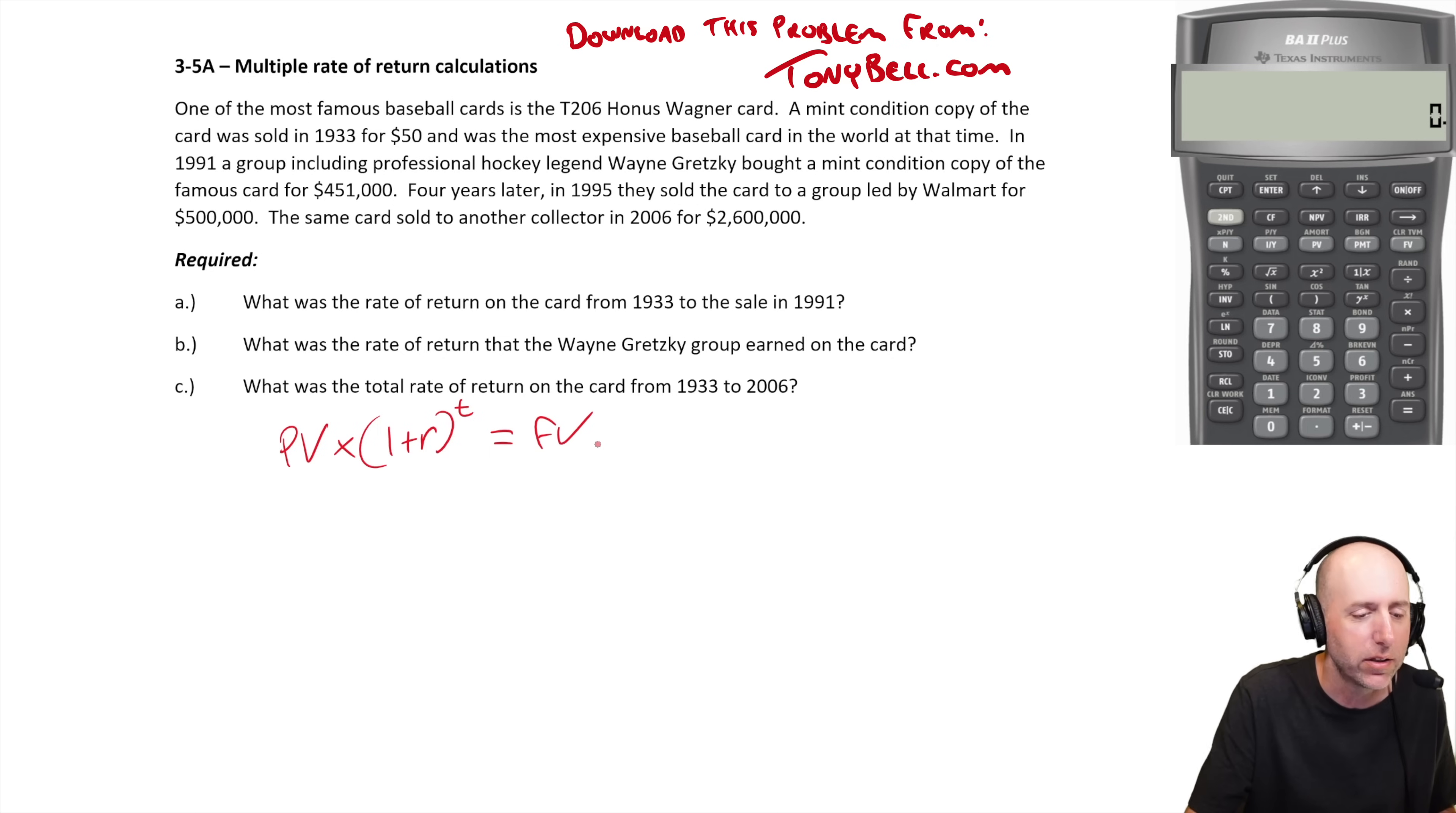It says one of the most famous baseball cards is the T206 Honus Wagner card - I urge you to Google it. A mint condition copy was sold in 1933 for $50. By the way, $50 in 1933 is like a ton of money. It was the most expensive baseball card in the world at the time.